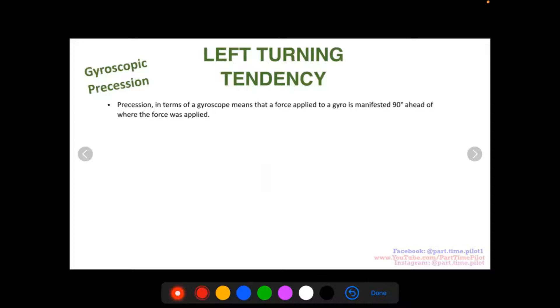So the next factor I want to talk about is gyroscopic precession. So precession in terms of a gyroscope means that a force applied to a gyro is manifested 90 degrees ahead of where that force is applied. So if you have a gyro, right, and it's spinning here, and you apply a force to the top of it,